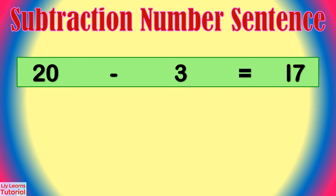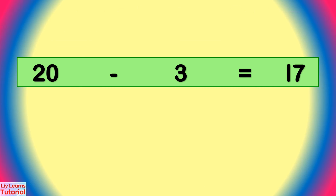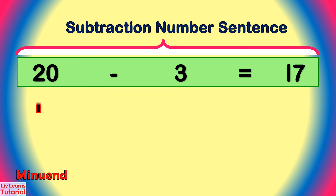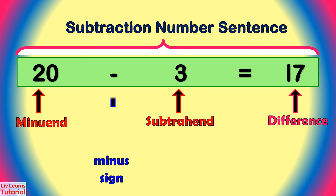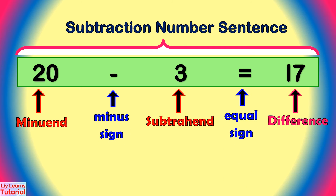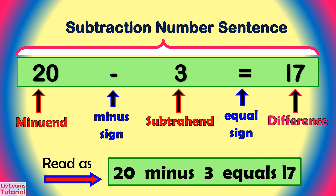This is a subtraction number sentence. 20 is the minuend. 3 is the subtrahend. 17 is the difference. This is a minus sign, and this is an equal sign. We can read this as 20 minus 3 equals 17.